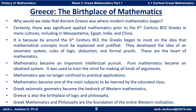Greece — the birthplace of mathematics. Why would we say that ancient Greece is where modern mathematics began? Certainly there are counter arguments that significant applied mathematics existed prior to the 6th century BCE in many cultures, including Mesopotamia, Egypt, India, China, and other places. The reason we say this is because around the 6th century BCE, the Greeks began to insist that mathematical concepts must be explained and justified. They developed the idea of an axiomatic system, rules of logic, deduction, and formal proofs — and these are the heart of mathematics. Mathematics there became an important intellectual pursuit.